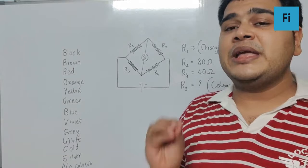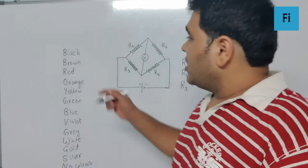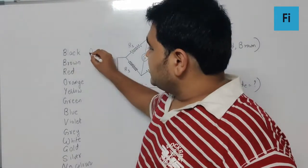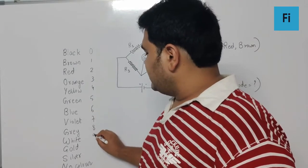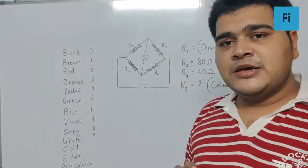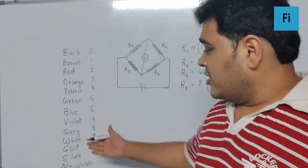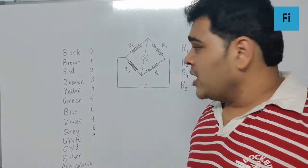For numbers, start with 0, 1, 2, 3, 4, 5, 6, 7, 8, 9. You do not have any number for the first and second band for gold, silver, and no color.